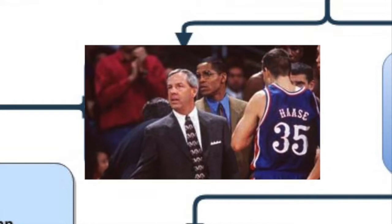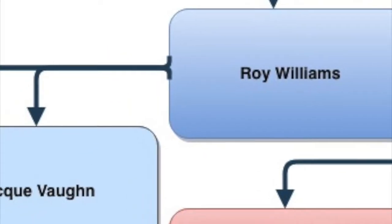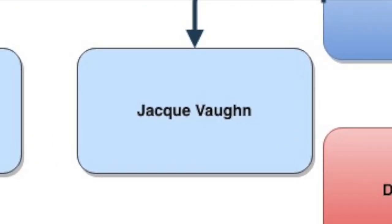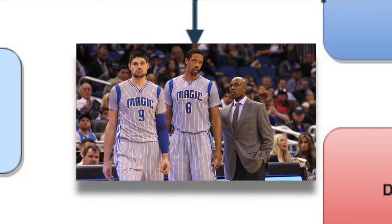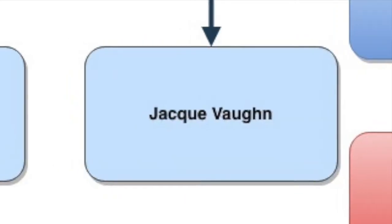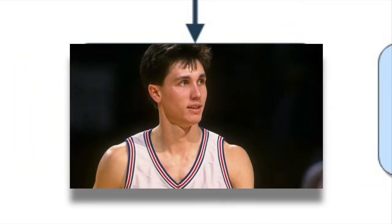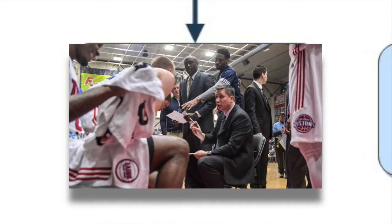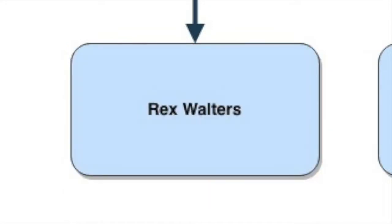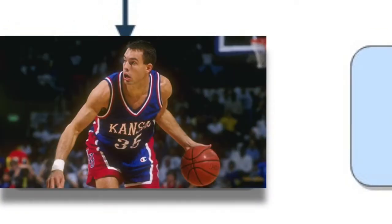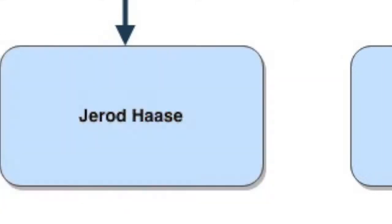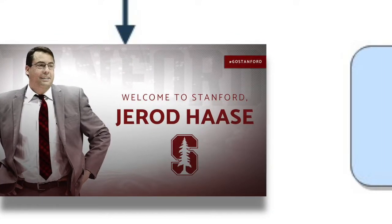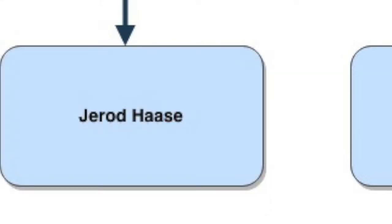Though Williams has coached his fair share of NBA talent as well, he left his impression on a few of his players that have gone on to coach. Jackie Vaughn was a former player for Williams and has gone on to play in the NBA and now coach in the NBA, where he is currently an assistant for the Brooklyn Nets. Rex Walter, also a former player for Williams while at KU, played in the NBA and later began coaching, currently an assistant for the Detroit Pistons. Jared Haas played for Williams in the 90s at KU and went on to be an assistant for Williams at KU and at North Carolina, and has now gotten his chance to make a name for himself coaching at Stanford.